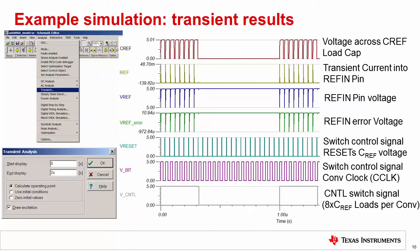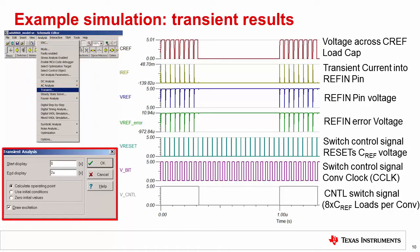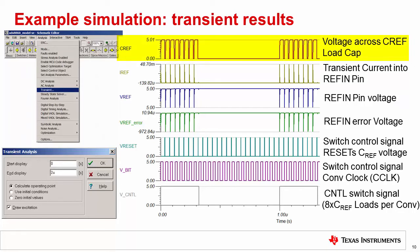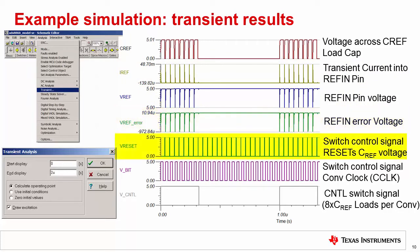Now we are prepared to look at the ADC settling using transient analysis. To do this, select analysis, then transient in the TINA SPICE menu. Next, select a time range that allows you to examine a few conversions. For this example, the sampling rate is one megahertz, so we ran the transient for two microseconds, which is two full cycles. The transient results include the voltage across the CREF load capacitor, the transient current into the reference input, the reference input voltage, the reference settling error, the switch control signal that resets the CREF voltage, the conversion clock frequency signal, and the switch control signal that masks the number of times the reference is sampled on each conversion cycle.